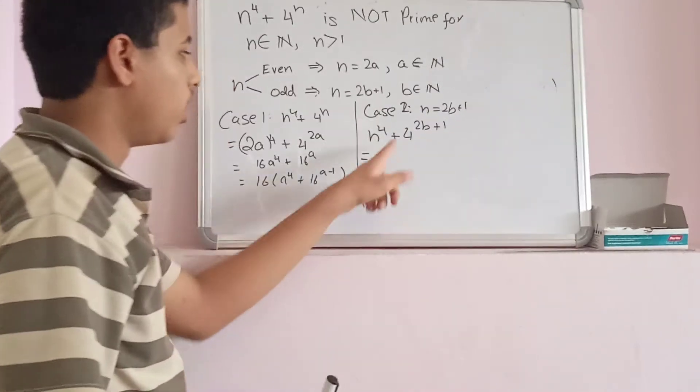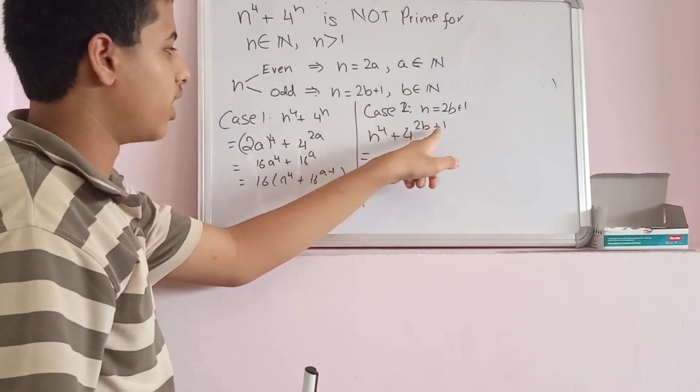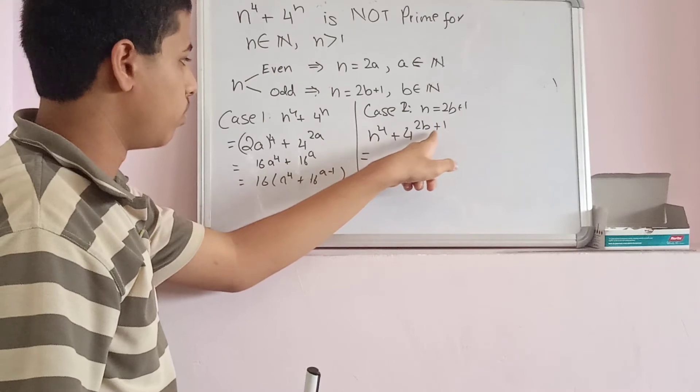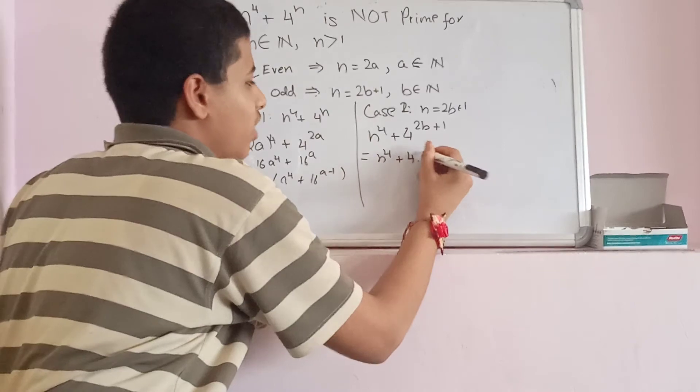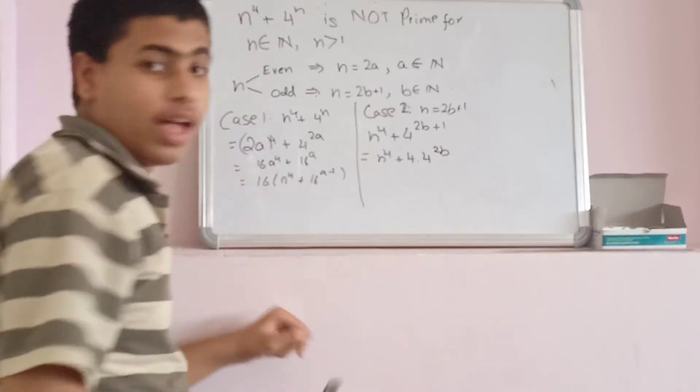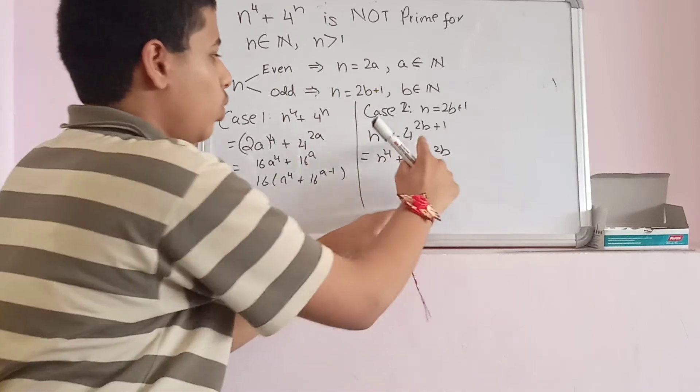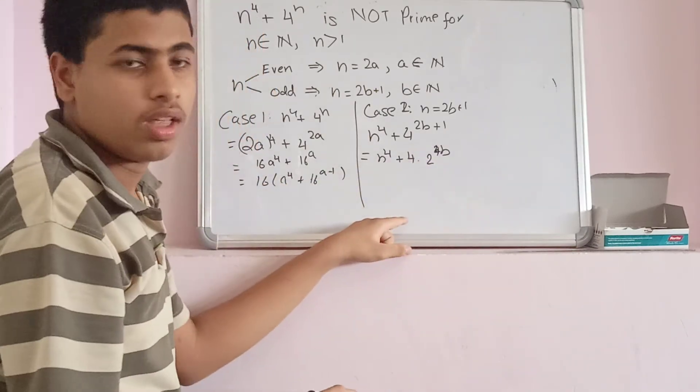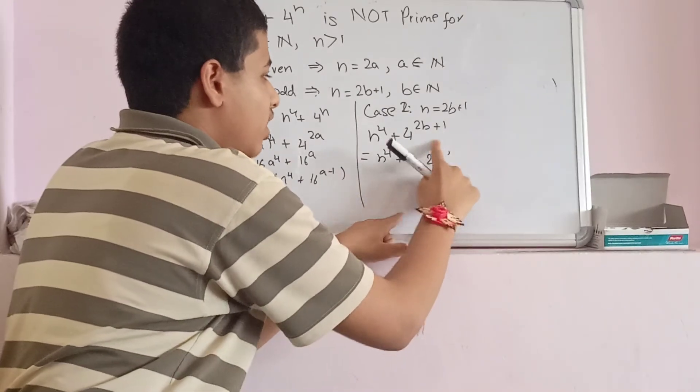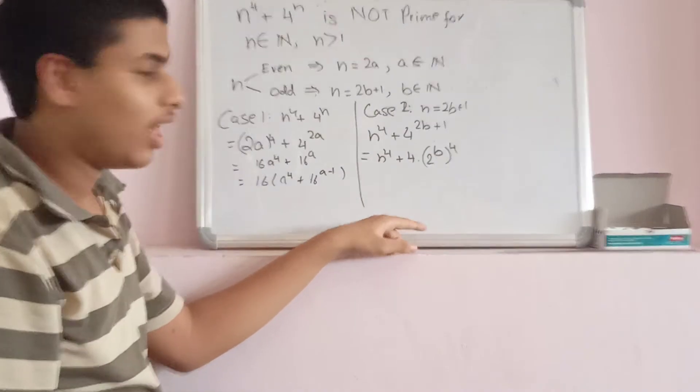What does that mean? n^4 + 4^(2b+1). I will write it as 4 times 4^(2b). In fact, I notice that this is 2^2. So I can write it as n^4 + 4 times 2^(4b). And I notice that by the laws of exponents, I can write it like that.